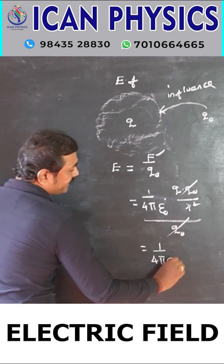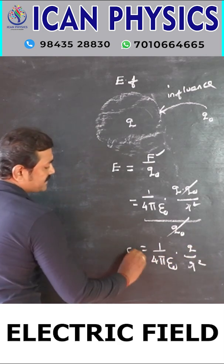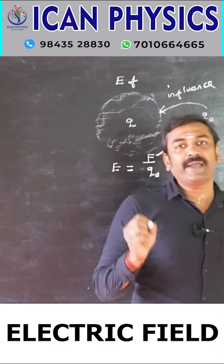So 1 by 4 pi epsilon 0, Q by R square is the electric field.